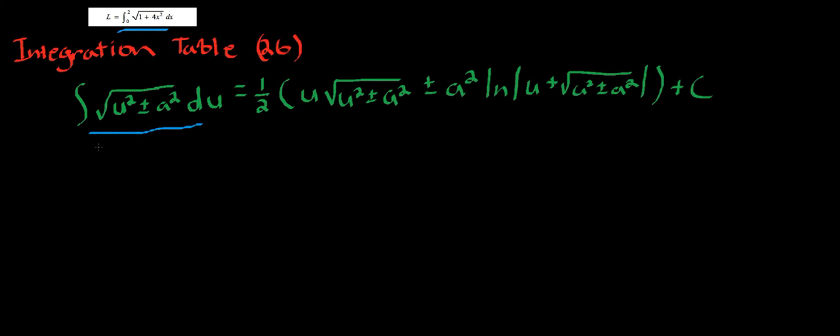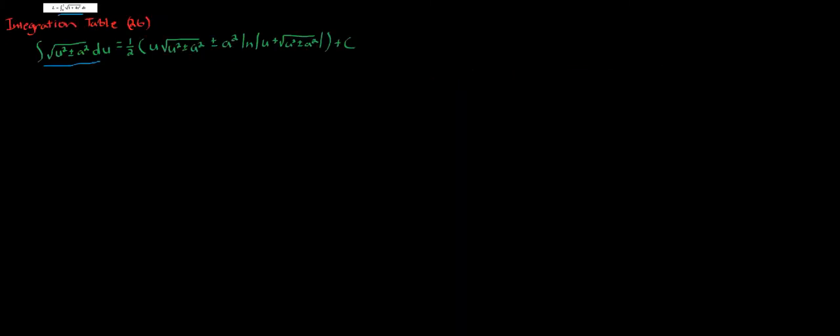So I'll rewrite what we have. We have L, which I'm assuming means the arc length of the integral from 0 to 2 of square root of 1 plus 4x squared dx. We need it to look like u squared plus a squared. If we let a equal 1, or the square root of 1 which is 1, that'll cover for our a squared.